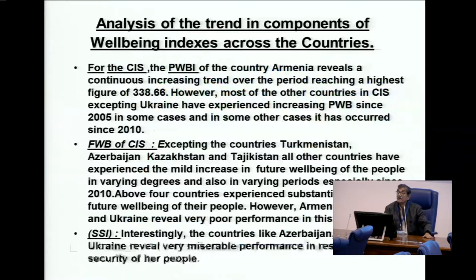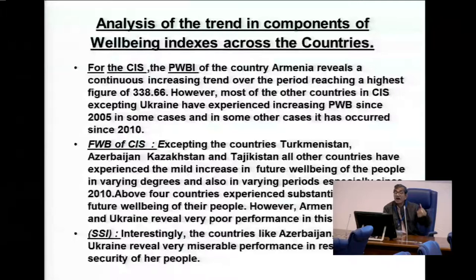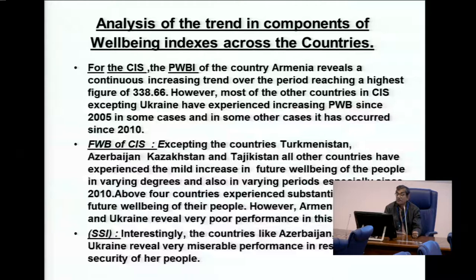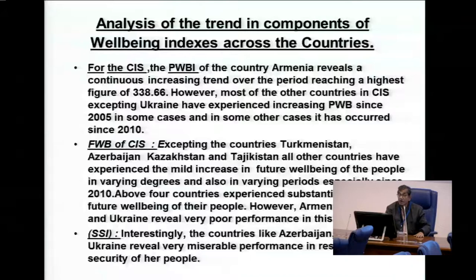Looking at trends in individual well-being index rates, Armenia in the CIS group has experienced a continuous increasing trend, reaching the highest figure of 338.66% increase. Most other CIS countries, except Ukraine, have experienced increasing present well-being since 2005 in some cases and since 2010 in others. For future well-being in CIS, except Turkmenistan, Azerbaijan, Kazakhstan, and Tajikistan, all other countries have experienced a mild increasing trend. Countries like Azerbaijan, Uzbekistan, and Ukraine have very poor performance in respect of social security.